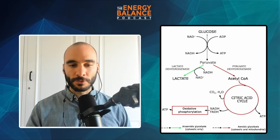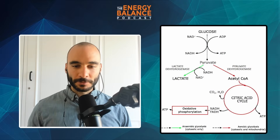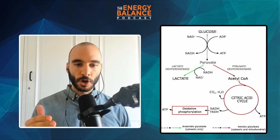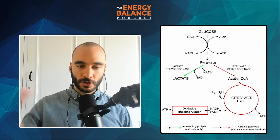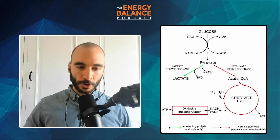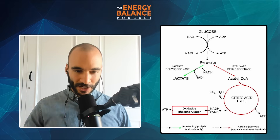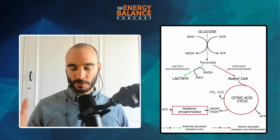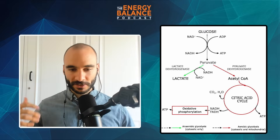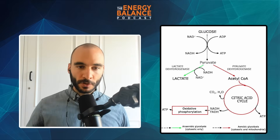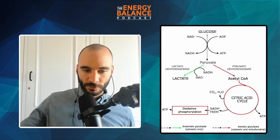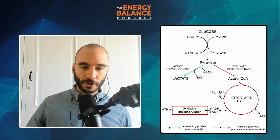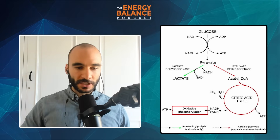What winds up happening — and there's a graphic right below — is that instead of that glucose turning to pyruvate and then going to acetyl-CoA, it just gets shunted towards lactate. Basically, the body says: whatever glucose we have, we have to get rid of it. We need to make sure we have enough of some important products like NAD+. So we're going to move it to lactate, not get all the energy out of glucose that we want, and continue to burn these fatty acids inside the mitochondria.